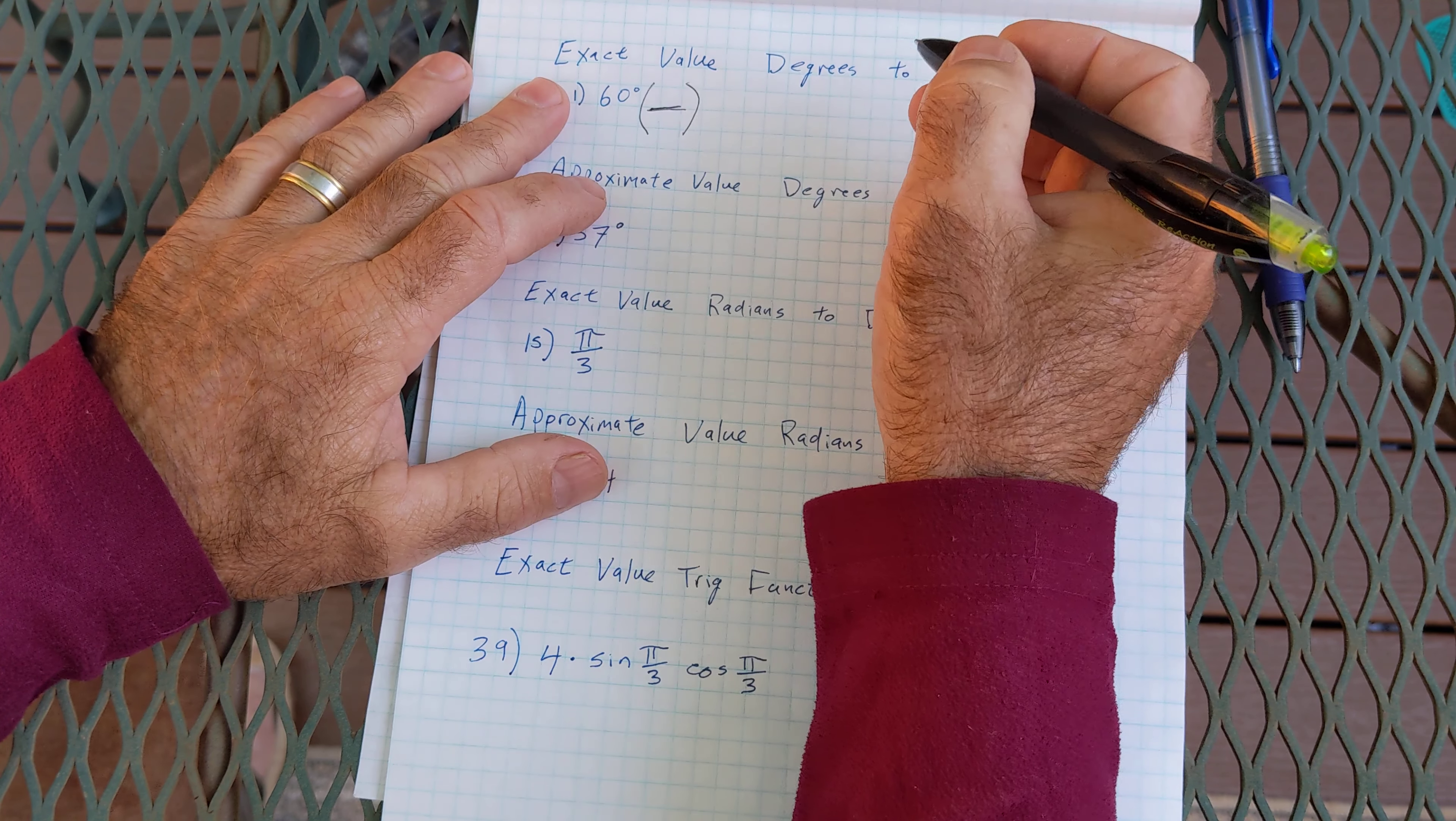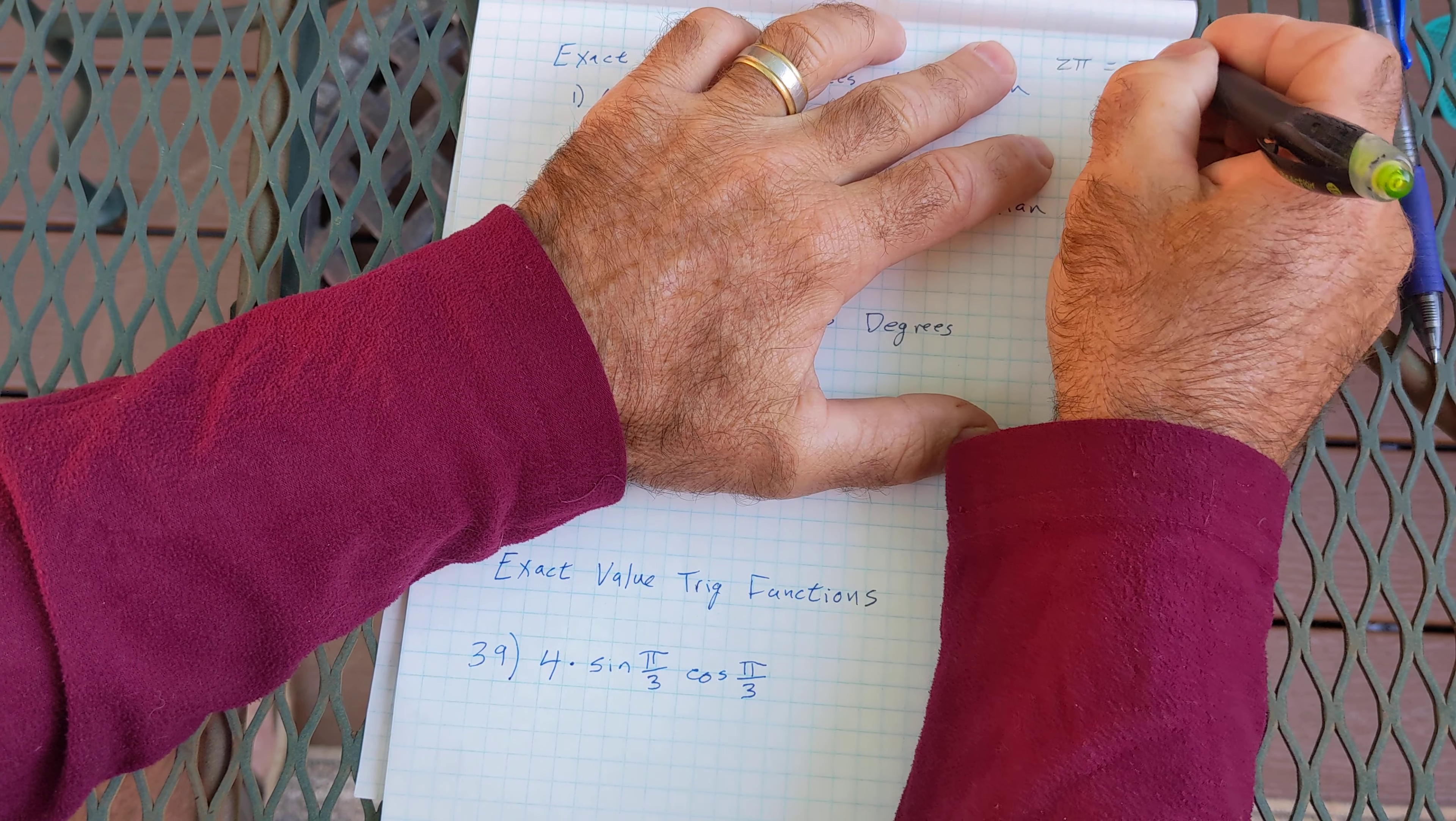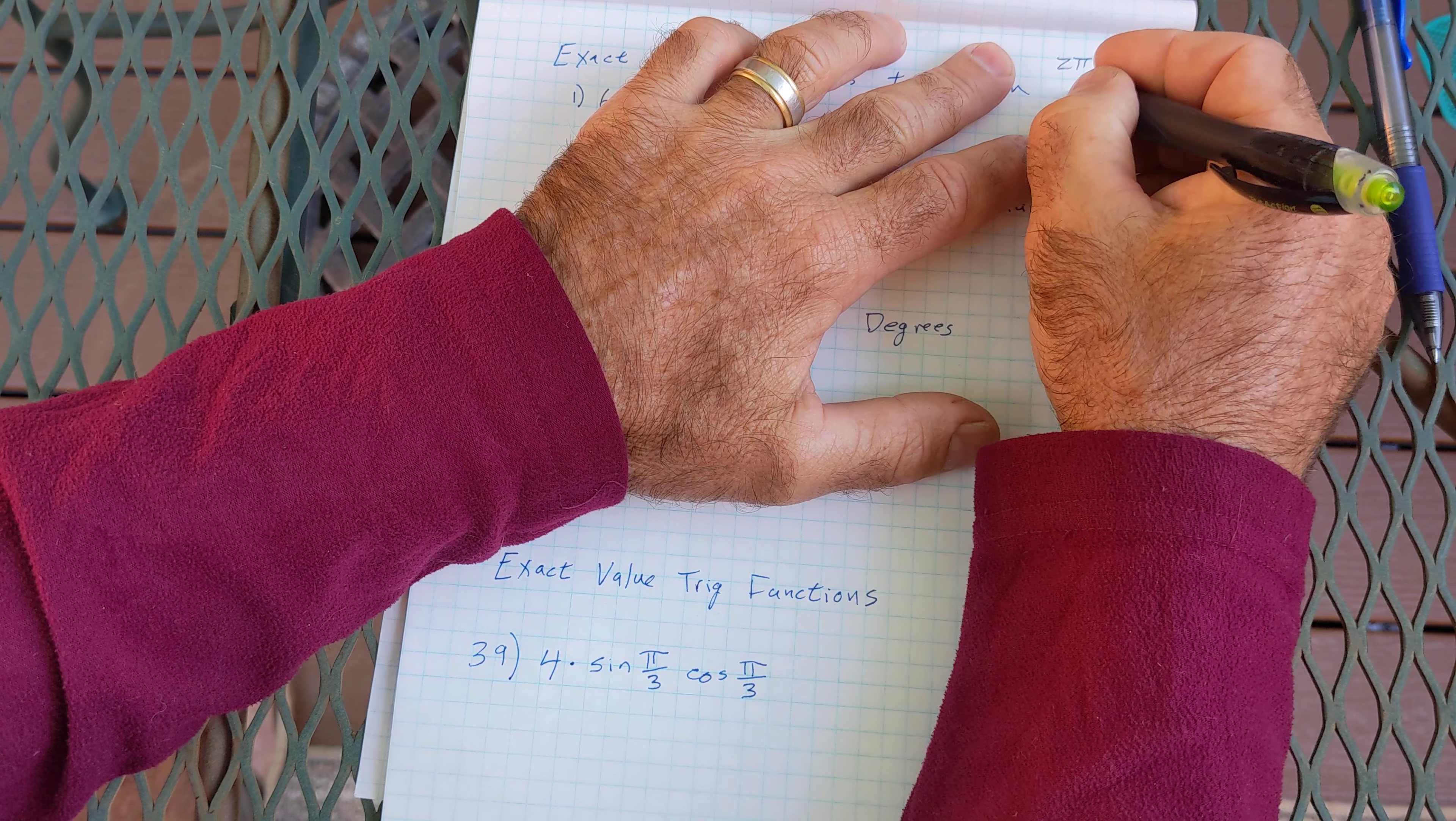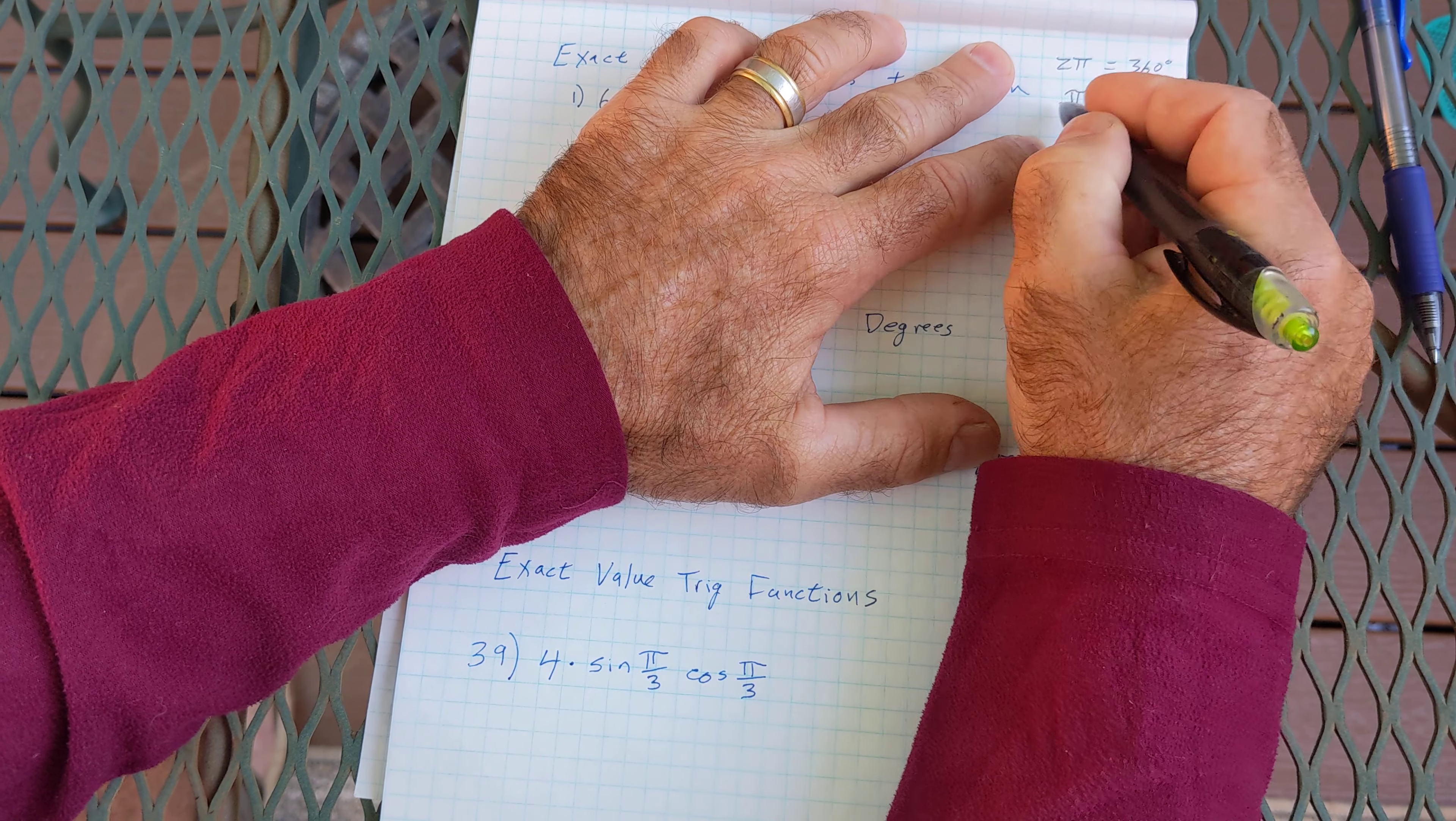So I know that all the way around is 360 degrees. So 2 pi and 360 have the same weight. This is a full revolution. This is a full revolution. Or if I cut that in half, pi is equal to 180 degrees. These two things have the exact same weight.